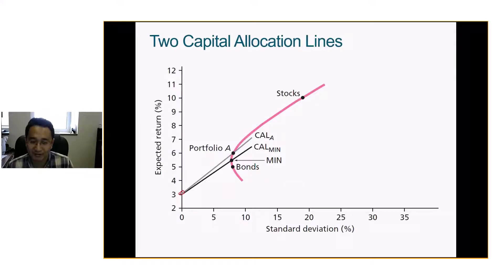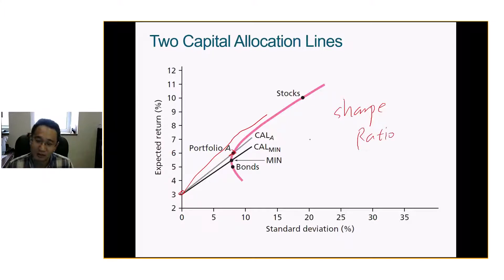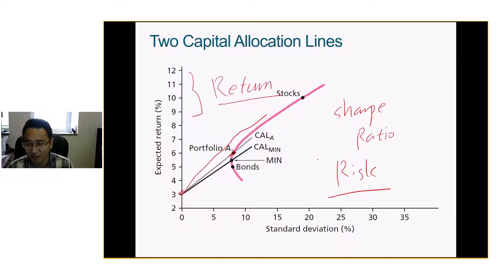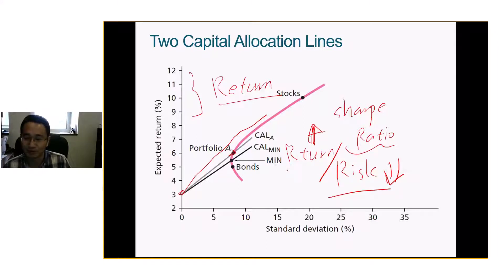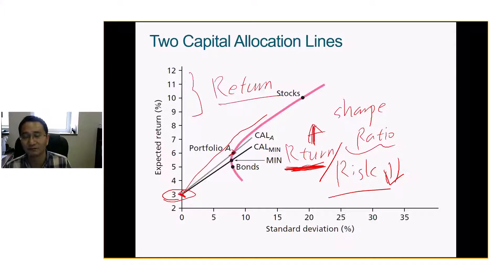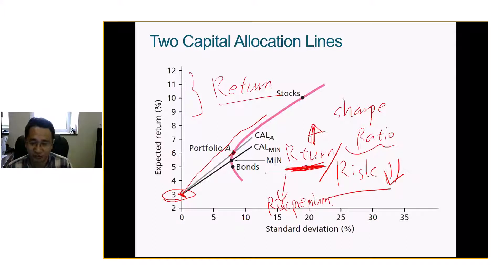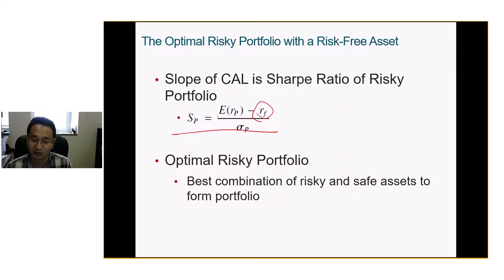Later they added risk-free assets to combine with this. This is called the Sharpe ratio. Return is on the y-axis and risk on the x-axis. You always want return minus risk-free rate divided by your risk to be as large as possible. The return here needs to be adjusted for the risk-free rate — that's the risk premium. This gives you the optimal risky portfolio.